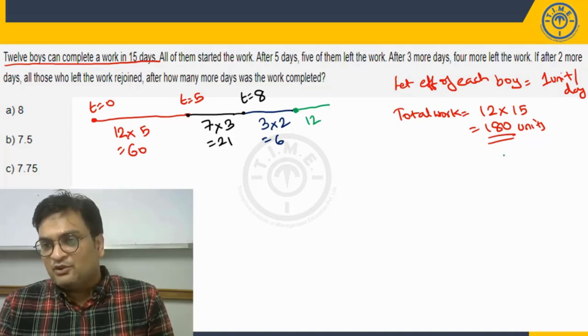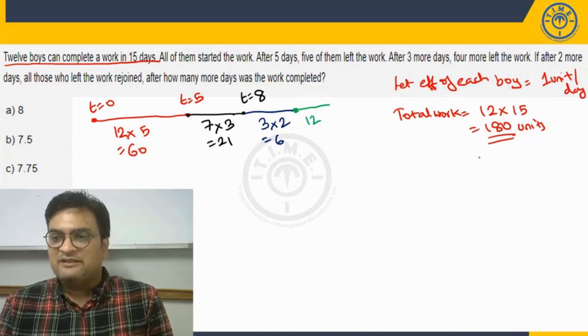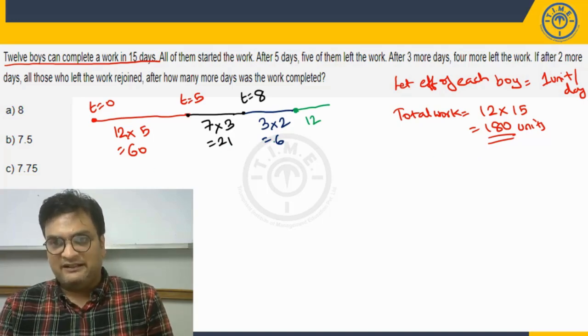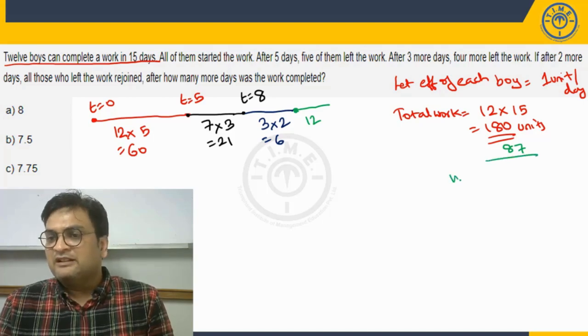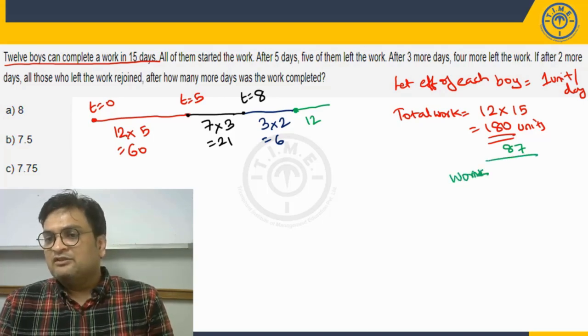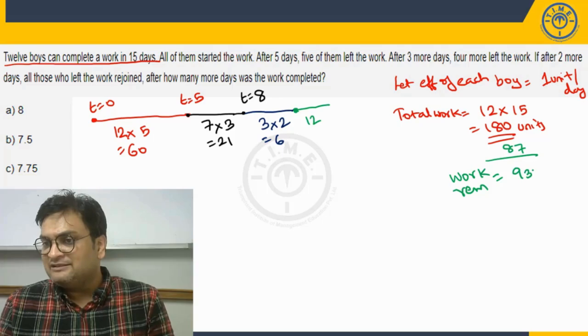Now please understand, total work that we have is one hundred eighty units. Now out of that one hundred eighty, how much work is done? We are done with sixty, twenty-one, eighty-one, eighty-one and six, eighty-seven units. So that means work remaining will be one hundred eighty minus eighty-seven which is ninety-three units.